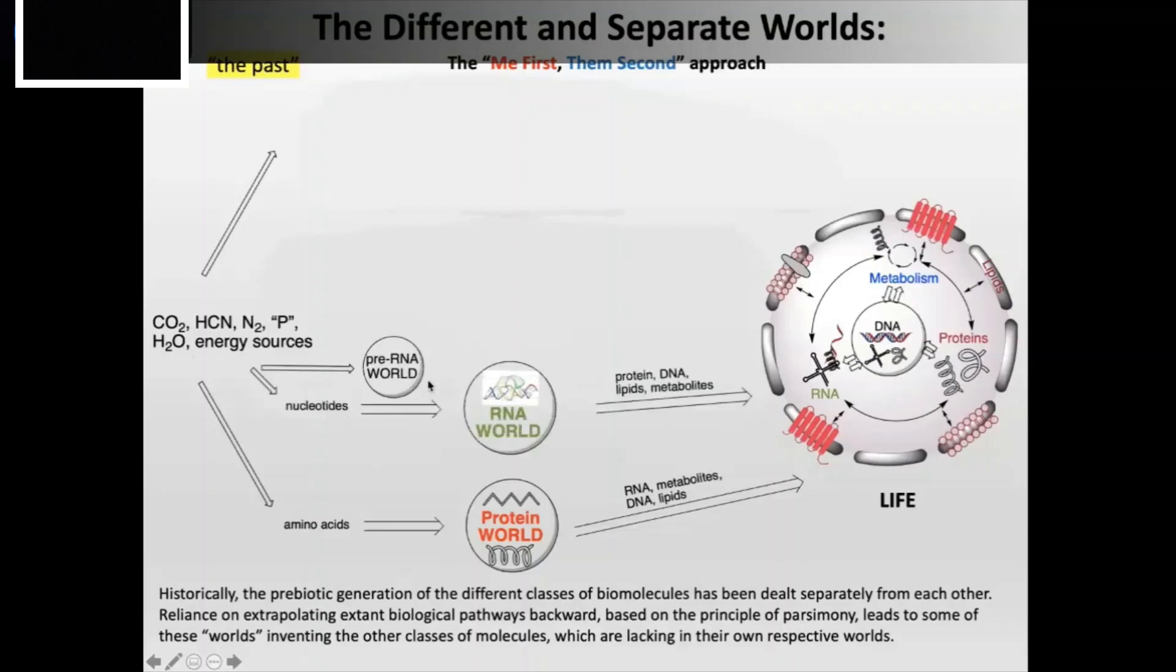Later on people studying RNA came up with the idea that RNA is a molecule that could self-replicate, transfer information, and at the same time act as a catalyst. Proteins cannot transfer information. Therefore they said it must be an RNA world that came about first, a self-replicating informational and catalytic molecule which then gave rise to proteins because the ribosome synthesized proteins.